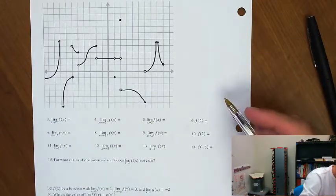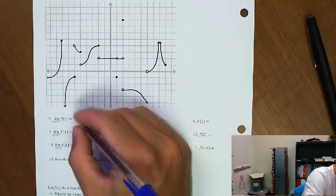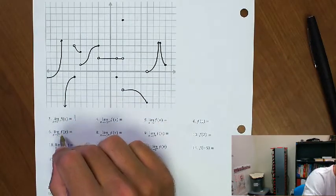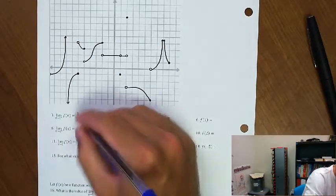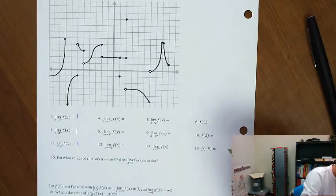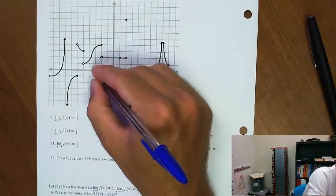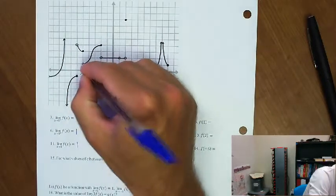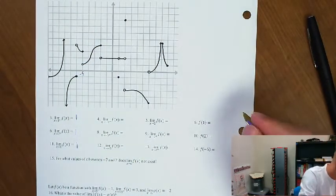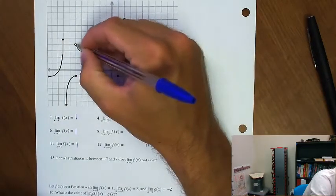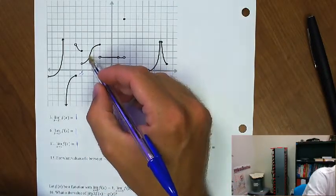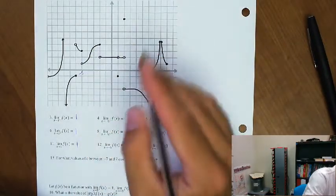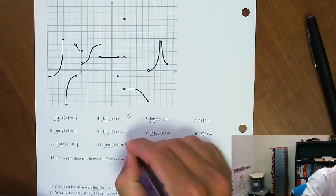As we approach 1 from the negative side, y is approaching 1. As we approach 1 from the positive side, f is also approaching 1. Since these exist and agree, the limit is 1. As we approach negative 5 from the negative side, we're approaching y equaling 3. But as we approach from the positive side, that's going to be 1. So this limit fails to exist.